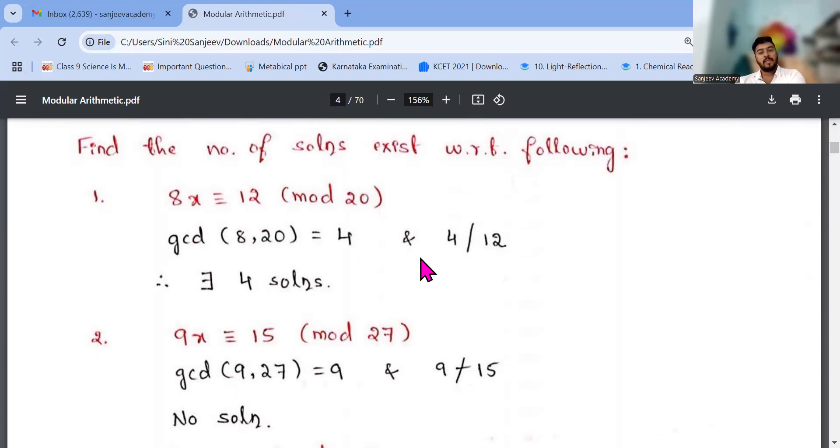Find the number of solutions that exist with respect to the following: 8x congruent to 12 mod 20. gcd of 8 and 20 is 4. And 4 divides 12. So it has 4 solutions, that's it.